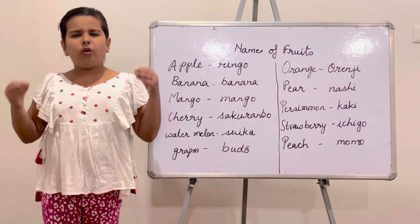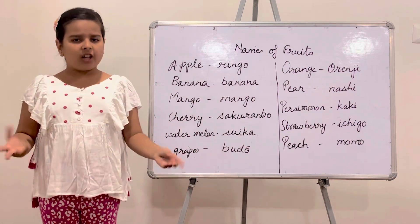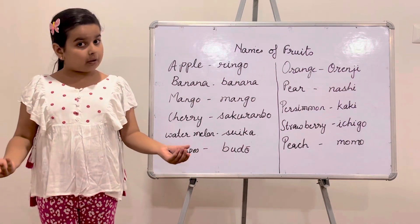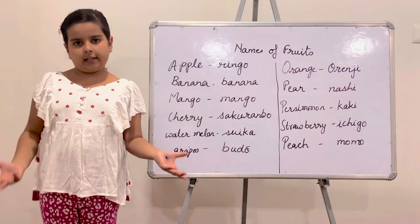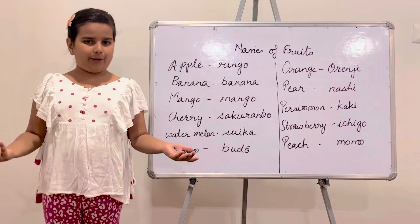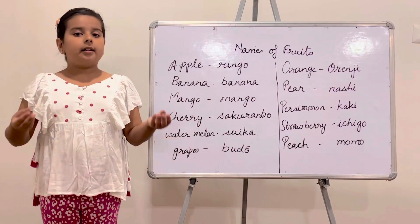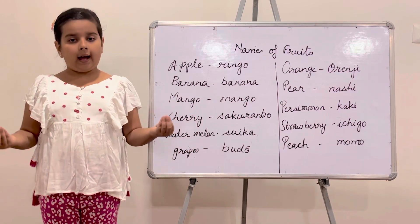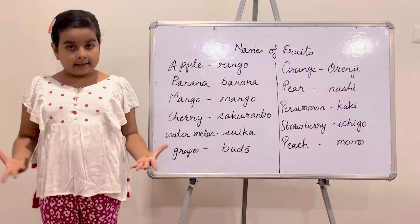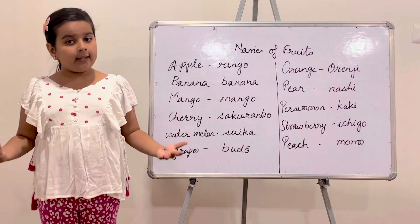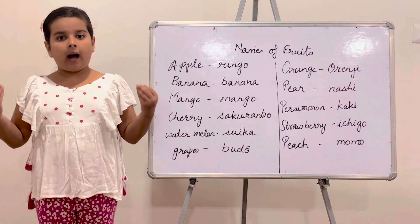The next fruit is Persimmon. Only some people have heard of this fruit, but it is a fruit. It is known as Kaki in Japanese. Kaki.